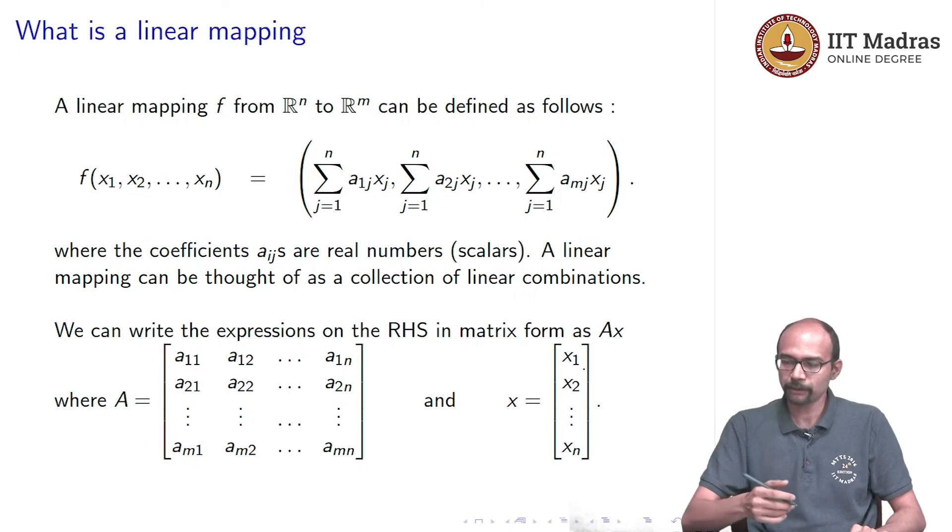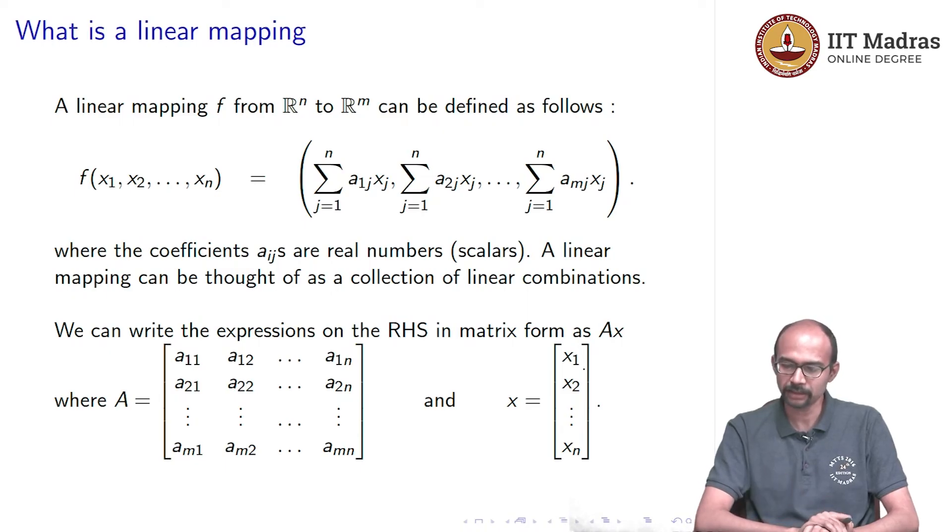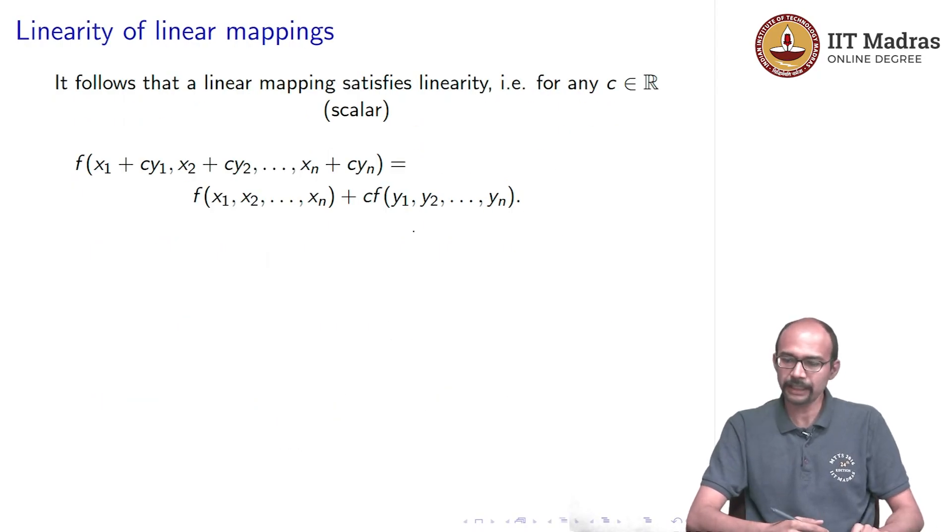We can of course write this as matrix multiplication because notice that the right hand side, if we think of it instead of a row vector, if we think of it as a column vector, then we can obtain it as multiplying A times x. What is A? A is exactly the matrix given by putting these coefficients into the appropriate places. So, the matrix, the ijth entry of A is aij, where aij is the corresponding coefficient above.